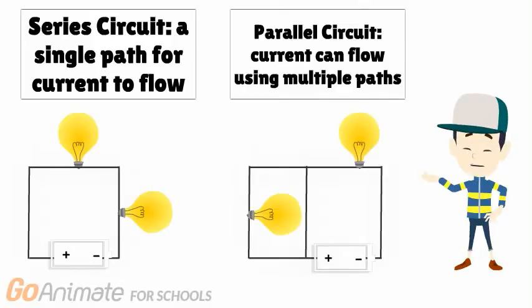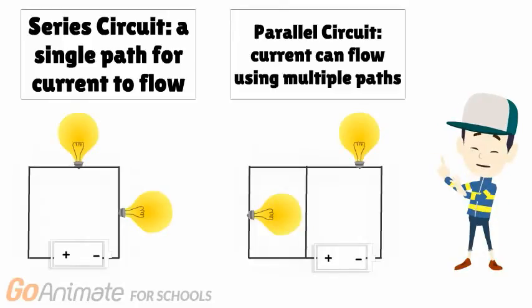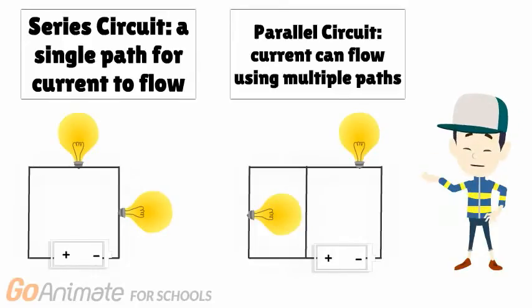A parallel circuit, on the other hand, has multiple ways for current to flow. If one path is broken, there is another for the current to use.